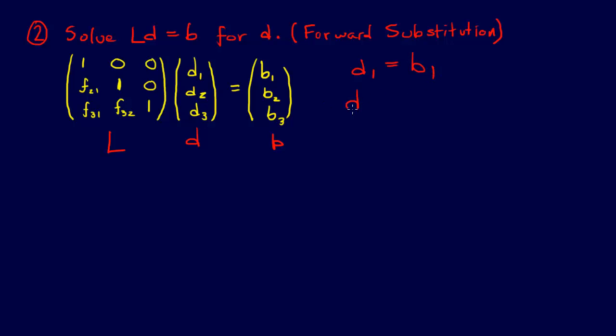And then we can just say F21 D1 plus D2 equals B2, and we can solve that for D2. So D2 equals, and we'll just bring this to the other side, D2 equals B2 minus F21 D1. That's pretty easy.